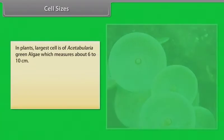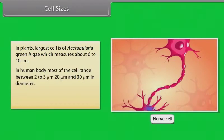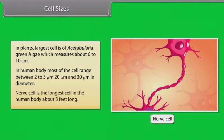In plants, the largest cell is that of acetabularia, a green alga, which measures about 6 to 10 centimeters. In the human body, most cells range between 2 to 3 micrometers, 20 micrometers and 30 micrometers in diameter. The nerve cell is the longest cell in the human body, about 3 feet long.